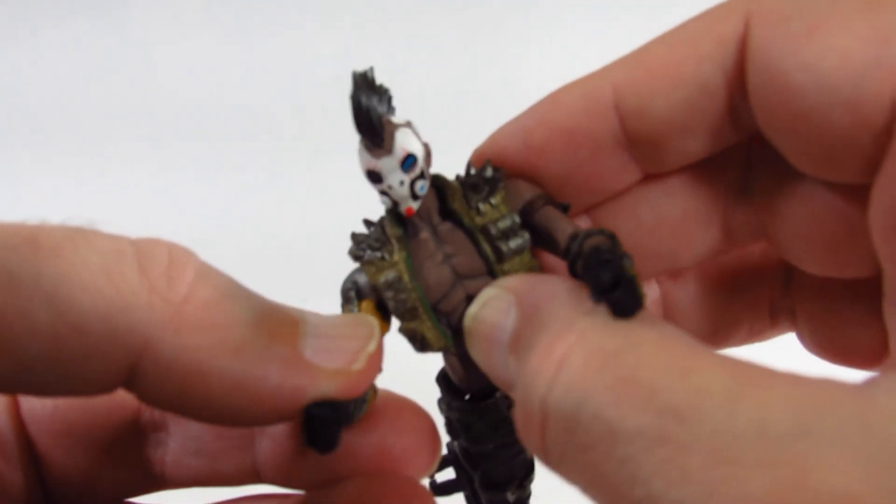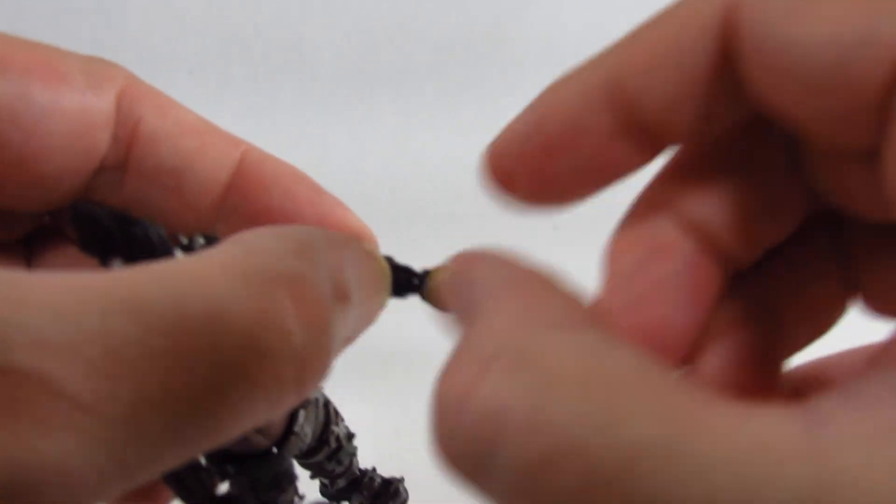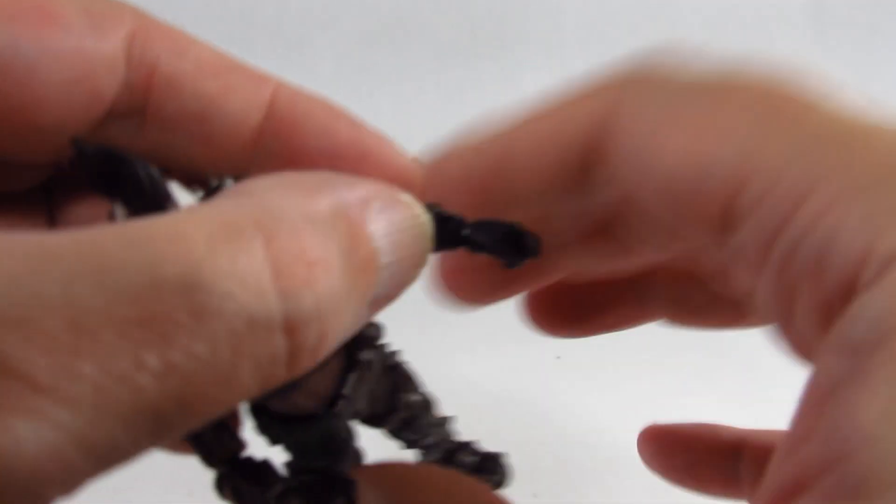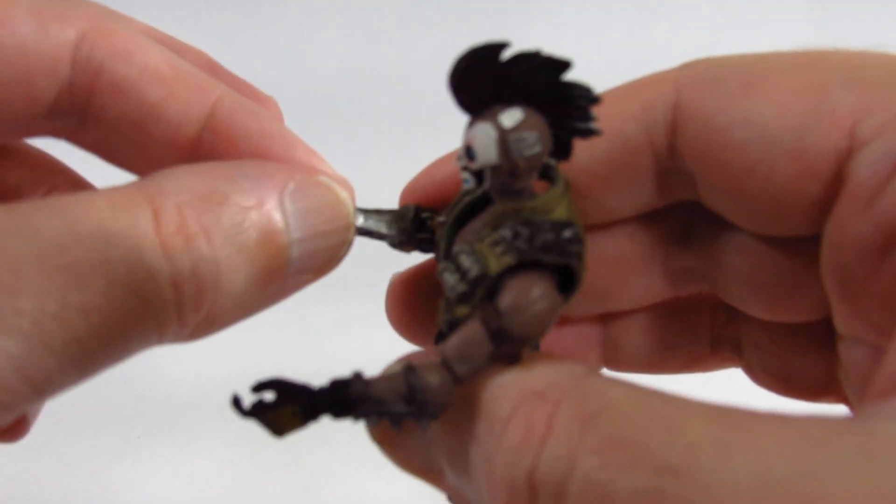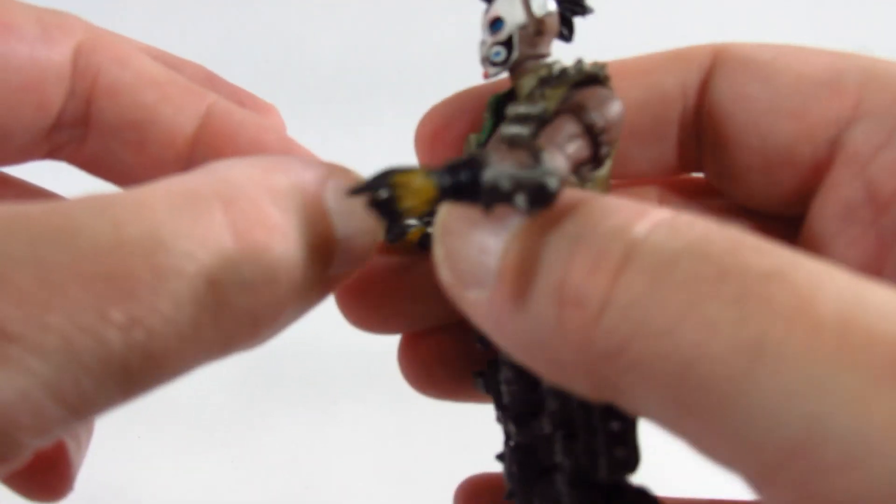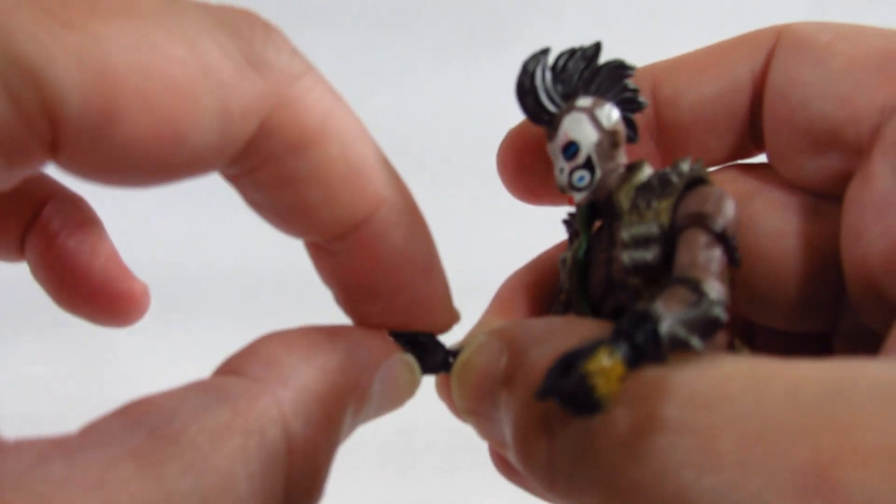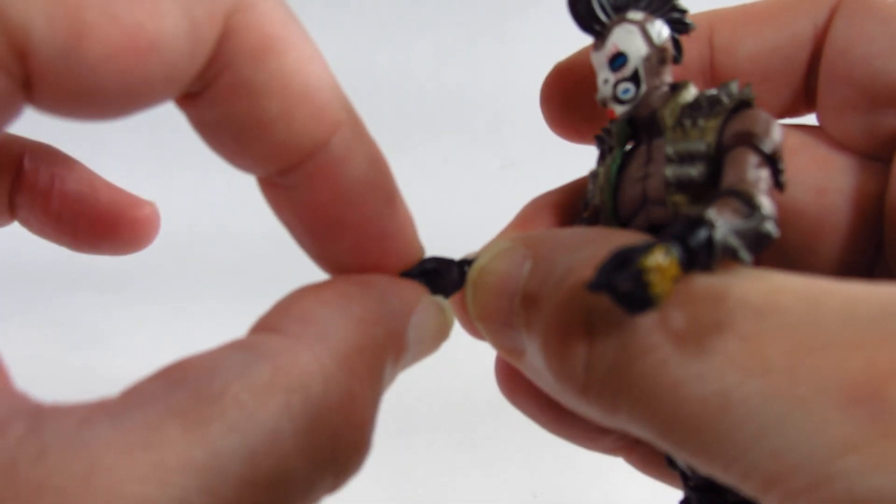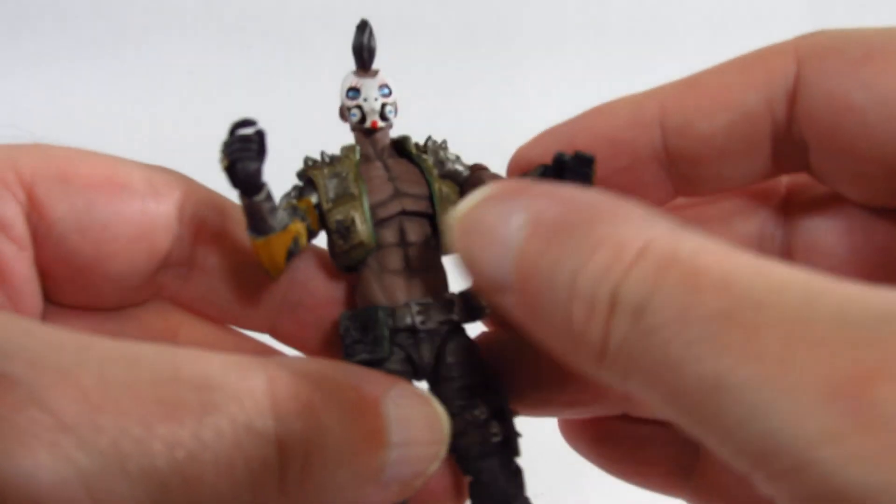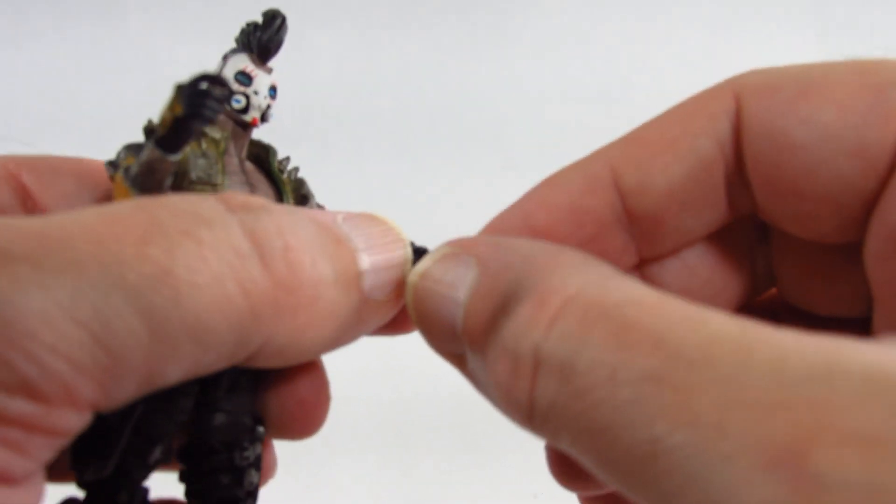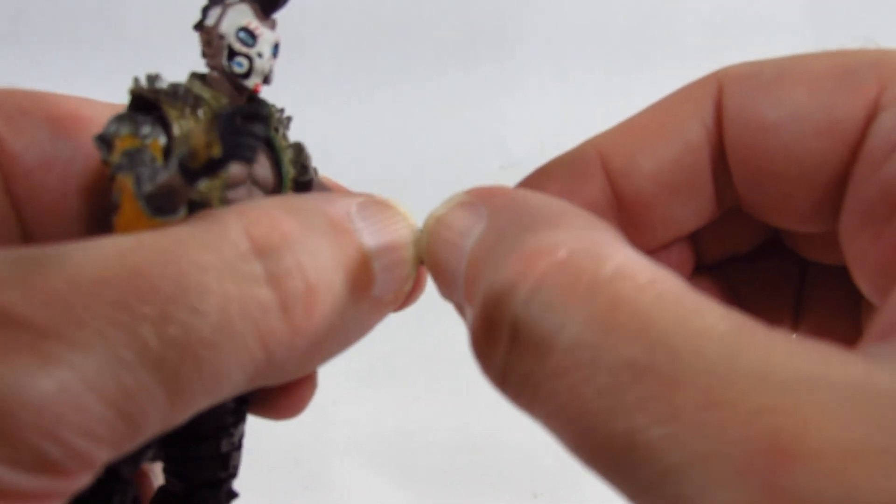And at the wrist we can turn the hands, so that is working. And I think it's a ball joint so we can move it around just a little bit. Yeah, just a tiny little bit. I don't want to push too hard, so I'm not sure there really is a ball joint there, but I think we can adjust the wrist just a little bit.